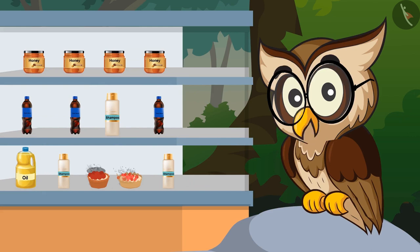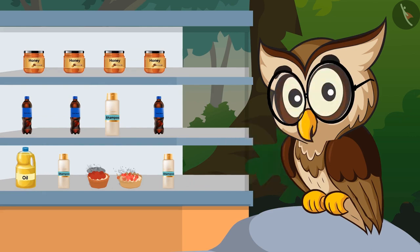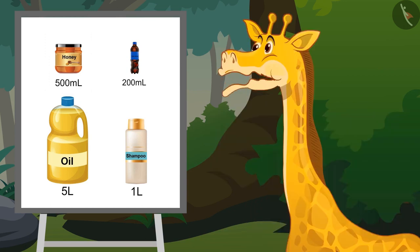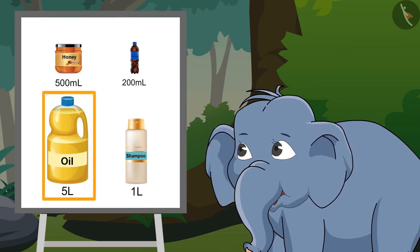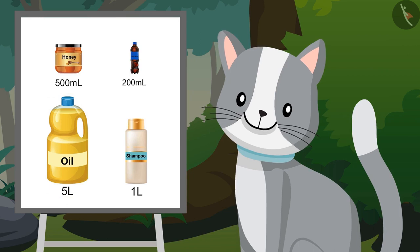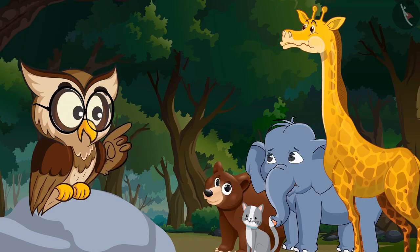Can you match all these liquids with their right amount? Bottle of Honey is 500 ml. Bottle of Cold Drink is 200 ml. Bottle of Oil is 5 litres. Bottle of Shampoo is 1 litre. Exactly!